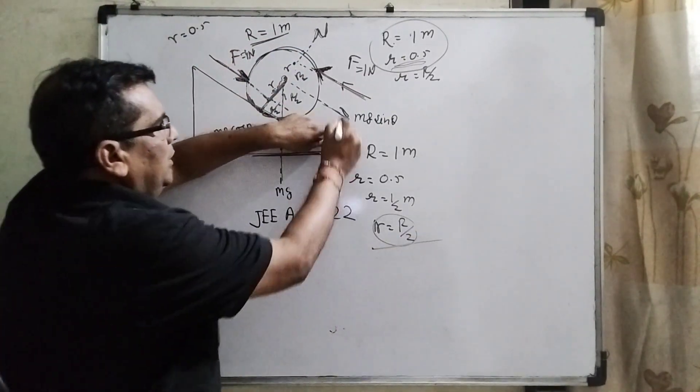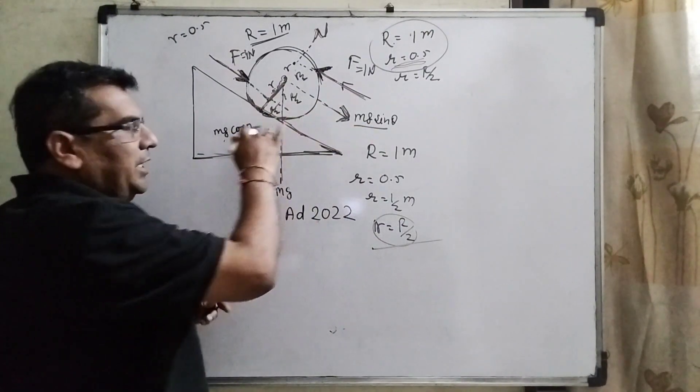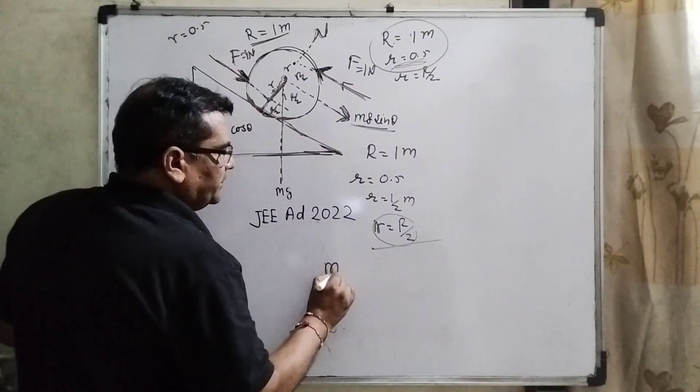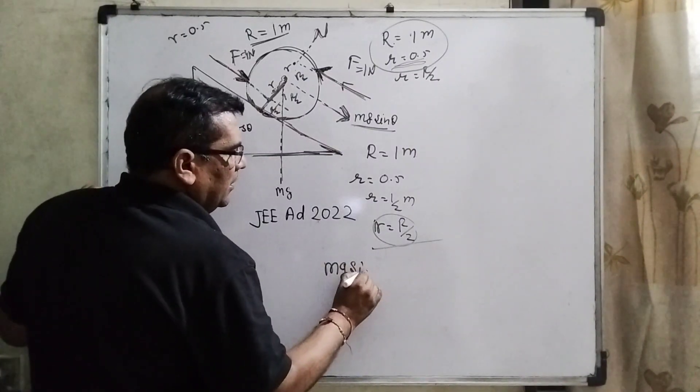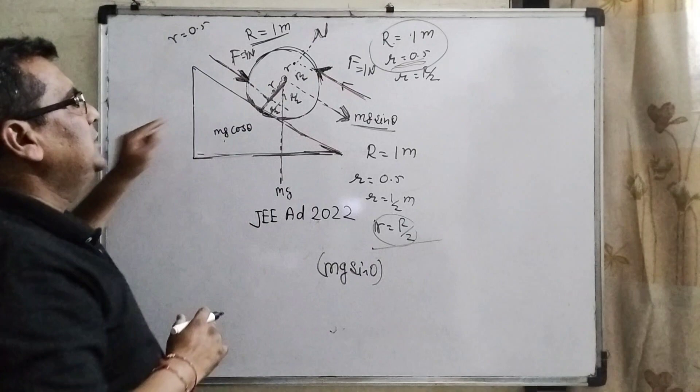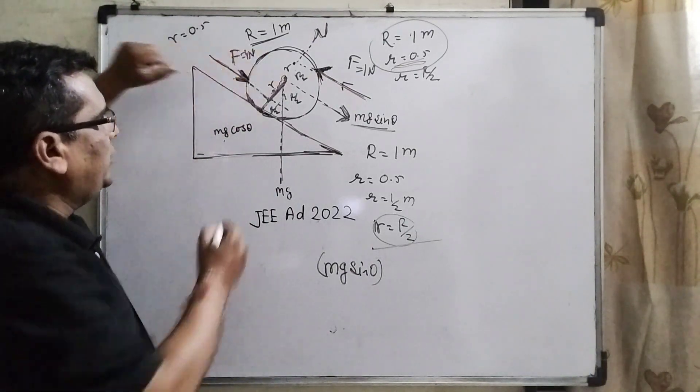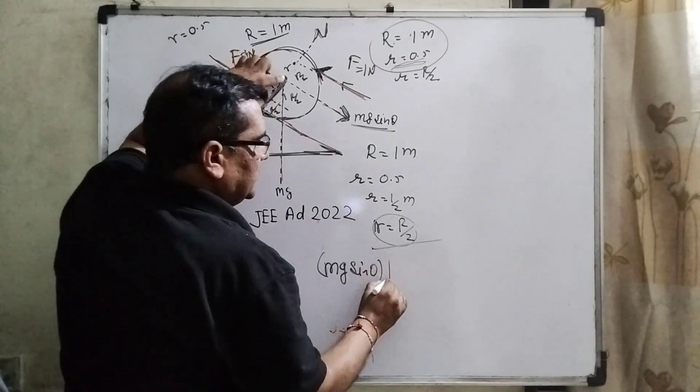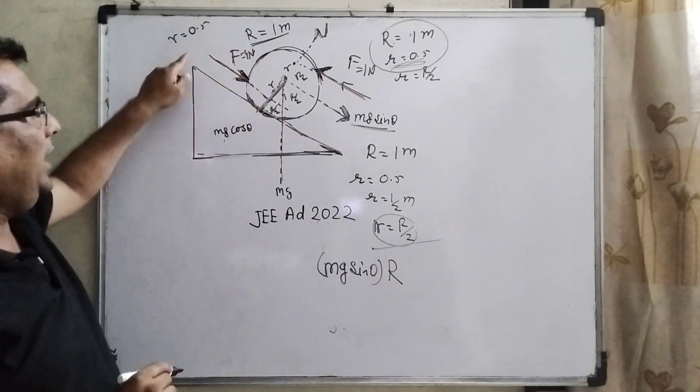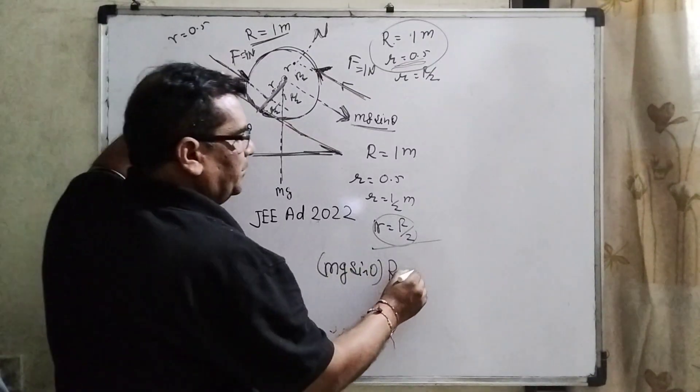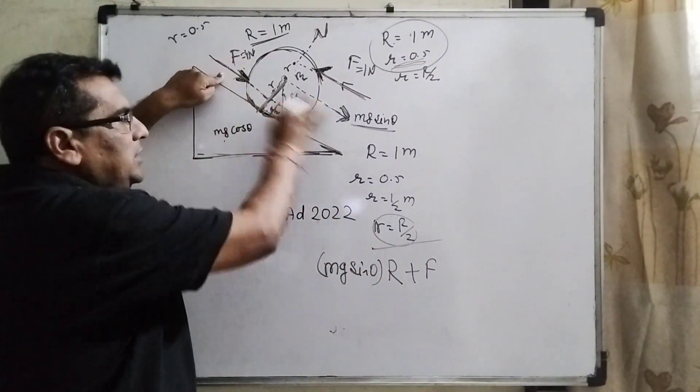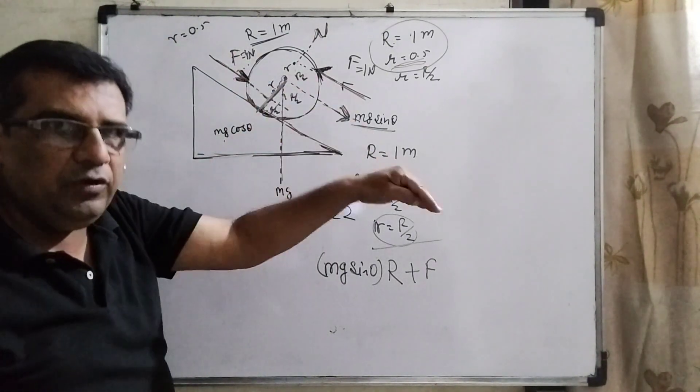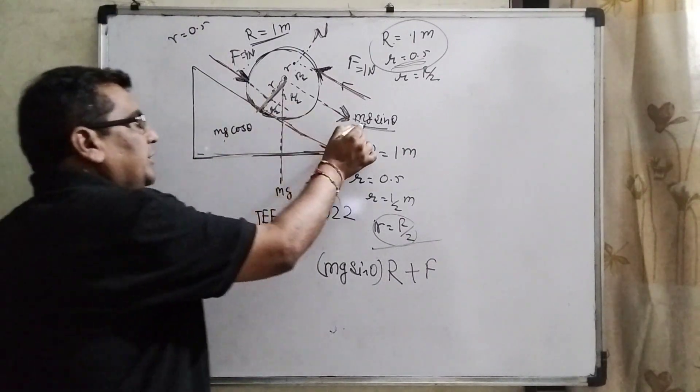Now which force is acting downward direction? Mg sin theta. This is the force. And what is the distance from the point of contact? You can see that this distance is total R. Yes, this is total R. And this is f plus f. Why we have to take the plus? Because this f force and mg sin theta are acting in the downward direction. So therefore we have taken here positive.